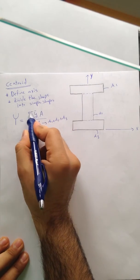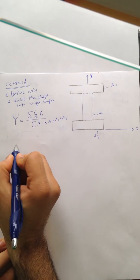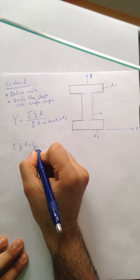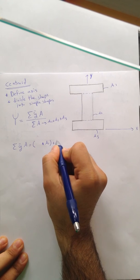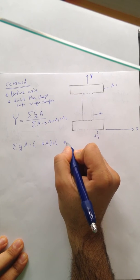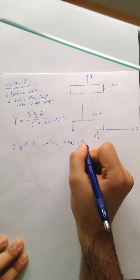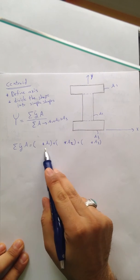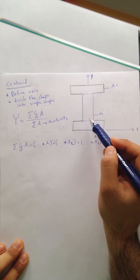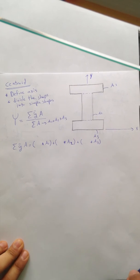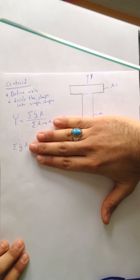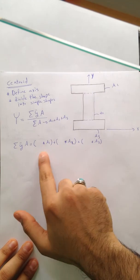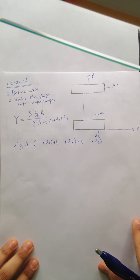The top term is a bit more tricky. It's going to be y-bar₁ times A1 plus y-bar₂ times A2 plus y-bar₃ times A3. The reason we have three terms is because we divided the shape into three parts. If we had a T-beam, we would only have two terms. But for this example, it's three terms.